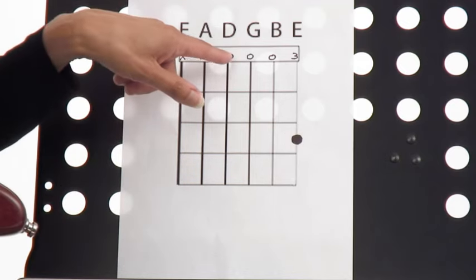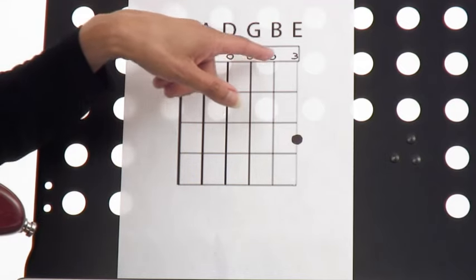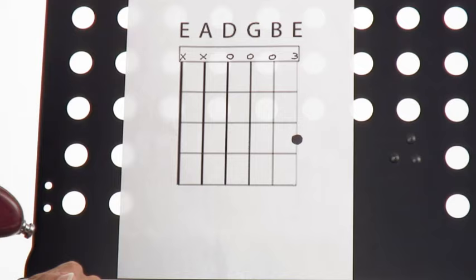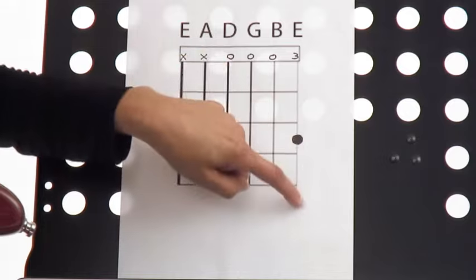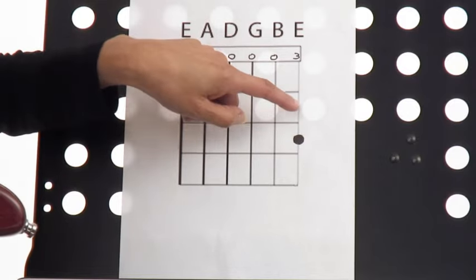So you're going to strum the fourth, third, and second strings open. The numbers represent the fingers. You're going to put your third finger on that first string that's hanging down, first, second, third fret.